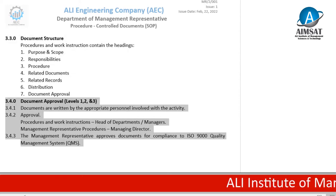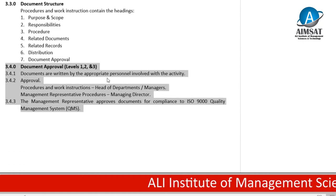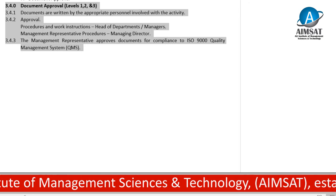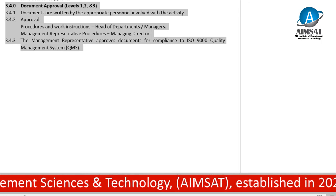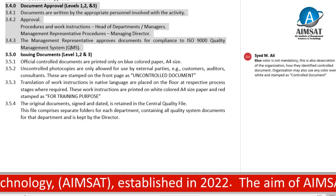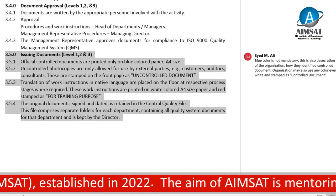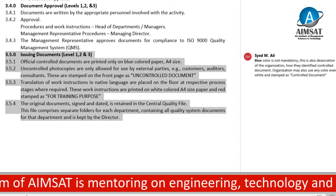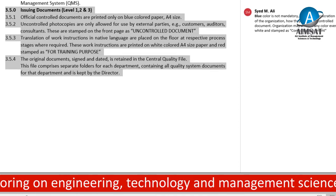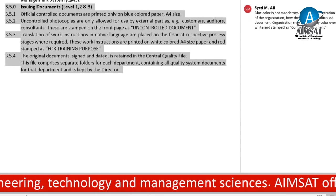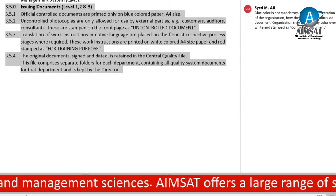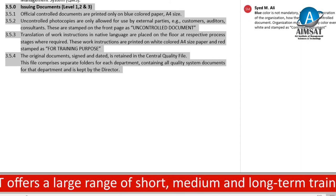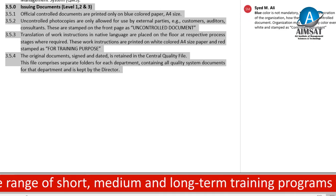Document approval levels 1, 2, and 3: documents are written by the appropriate personnel involved with the activity. Procedures and work sections will be approved by the head of department or the concerned manager. Management representative procedures will be approved by the managing director. The management representative approves documents for compliance to the ISO 9000 quality management system.